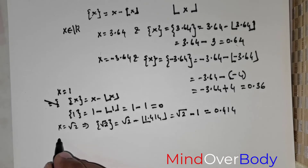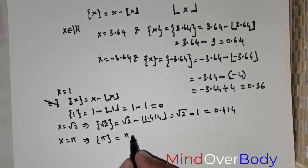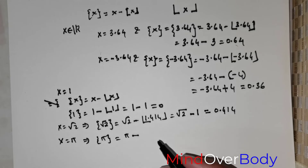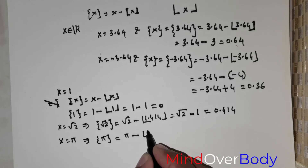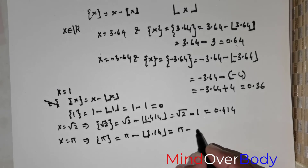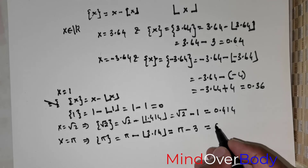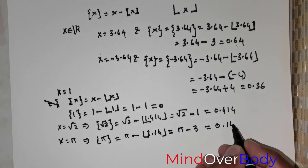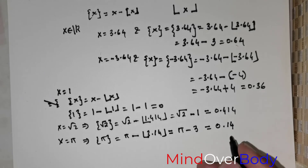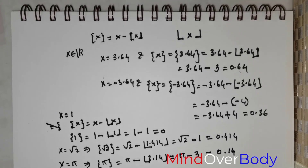Let me give one more example. If x equals pi, then the fractional part of pi equals pi minus the floor of pi. The value of pi is approximately 3.14, so the floor is 3. Therefore the fractional part of pi is approximately 0.14. These are a few examples given for your understanding.